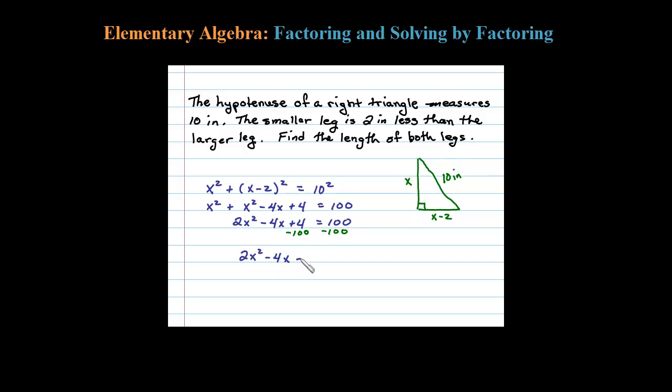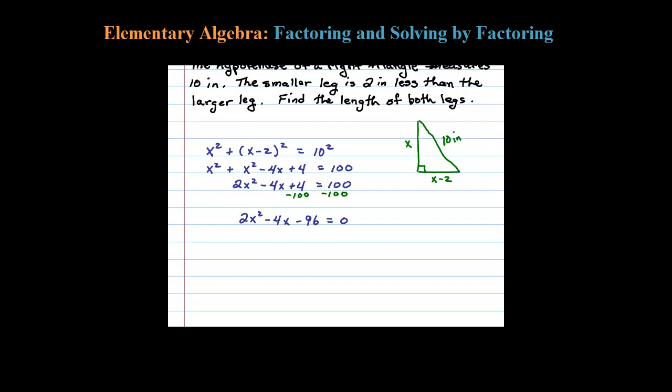Notice here there is a GCF. Usually it's easier to factor if you factor out that GCF first. So factoring out a 2, that'll leave me with X squared minus 2X minus 48. Now let's try to factor that quadratic.